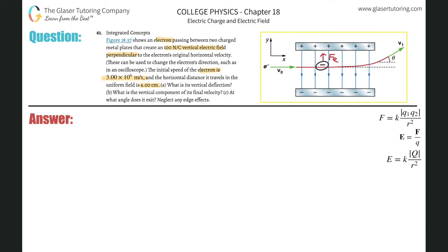The longer this electron takes to travel from left to right, the longer the force will be acting on it, and probably the greater the deflection and the greater the final vertical velocity will be. So my first question is: how long is it in the field? What's the time? How long is this charge in the field for?